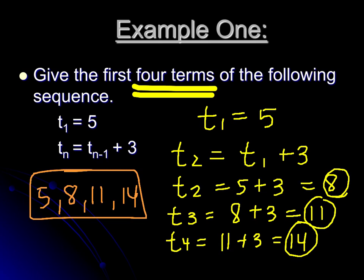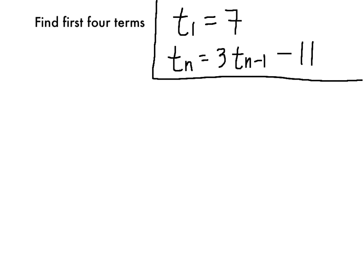That's the gist of how the recursive formulas work. This example will work pretty similarly, but we do have a slightly more complicated recursive definition. We're still trying to find the first four terms. t₁ is given to us, that's 7.